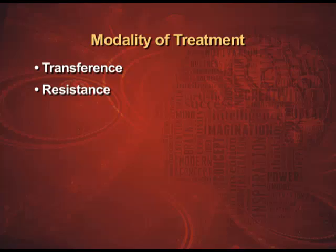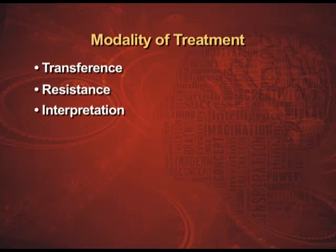The third process is interpretation, under which we have confrontation and clarification. Interpretation refers to how the therapist uses the unconscious material to make the client aware of the meaning of his thoughts or conflicts. The client is not aware of the hidden deeper meanings of the unconscious because all information comes out in the form of symbols not understood by the client.